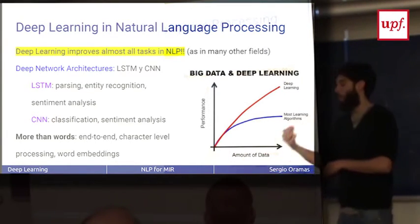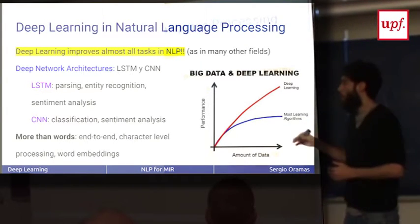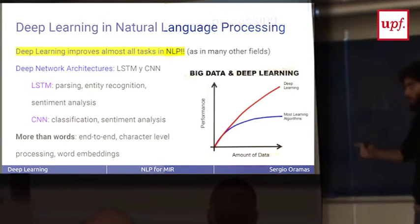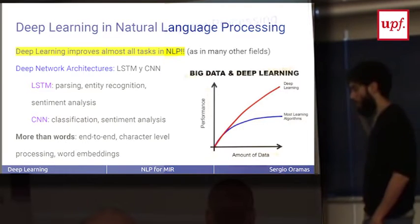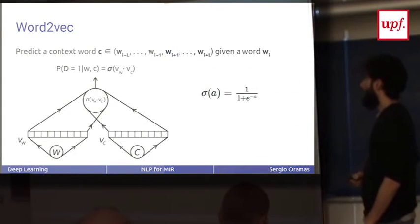Deep learning has also opened the possibility to do end-to-end learning. So you can use directly the text without creating an embedding matrix like I did before, or you can use character levels instead of words. You can use word embeddings as a resource layer.